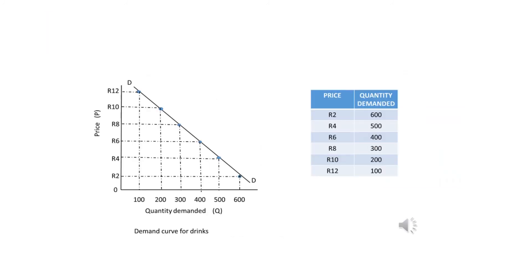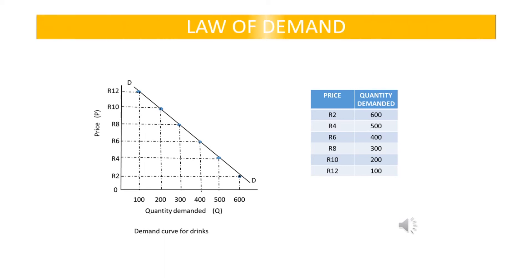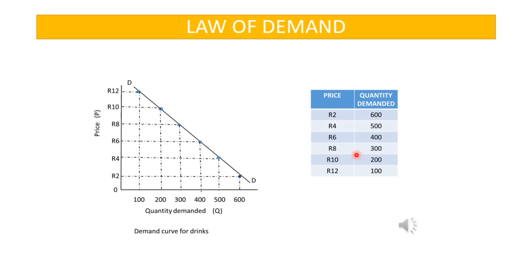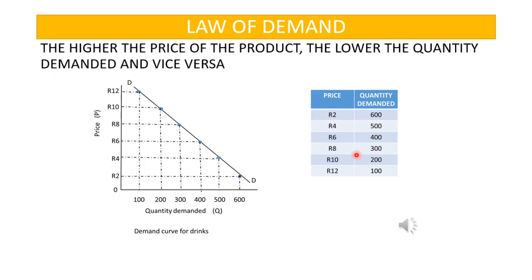Now we explain the law of demand using the demand curve and the demand schedule. The law of demand states that the higher the price of a product, the lower the quantity demanded, and vice versa — meaning the lower the price of the product, the higher the quantity demanded.